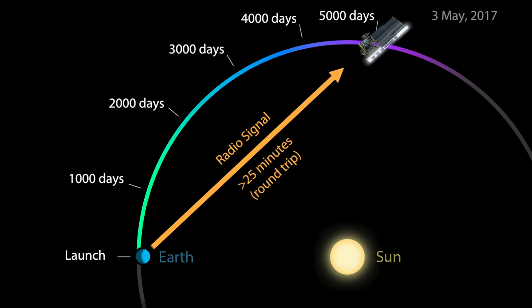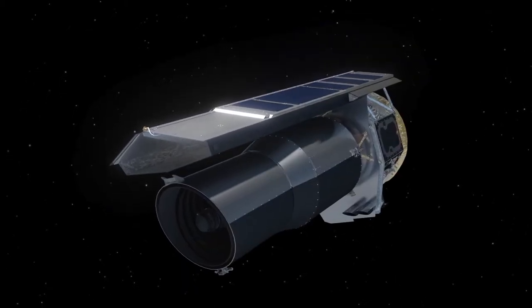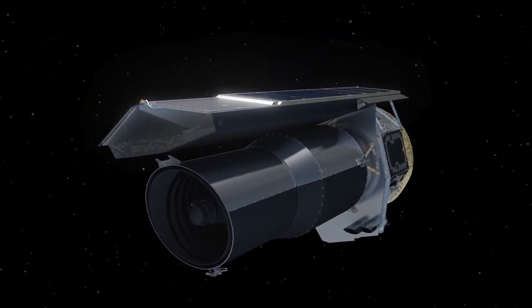Radio signals now take over 25 minutes to make the round trip. That's why Spitzer, like any good robot, needs to work independently from its human operators.